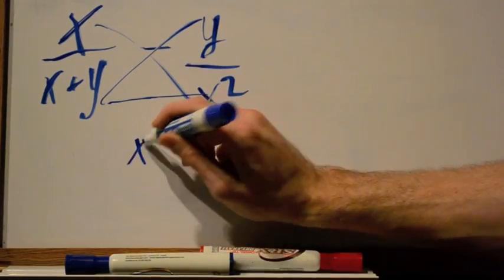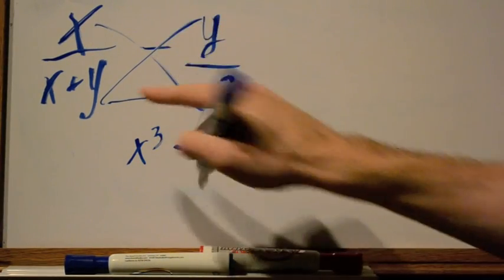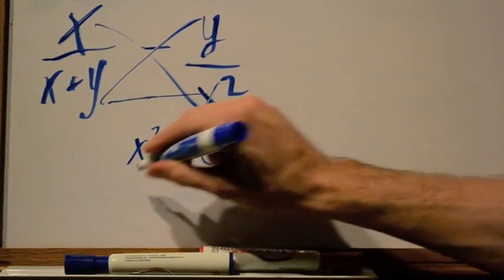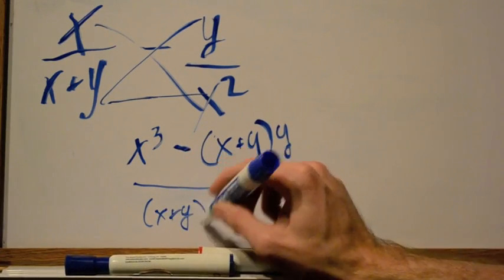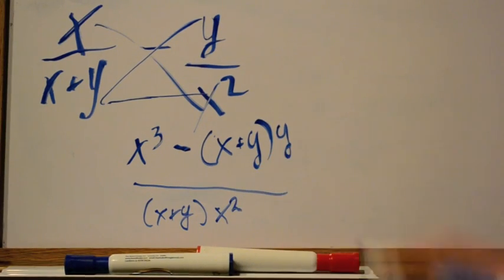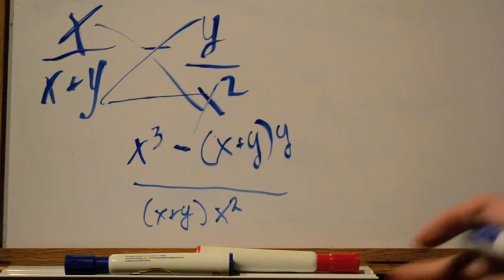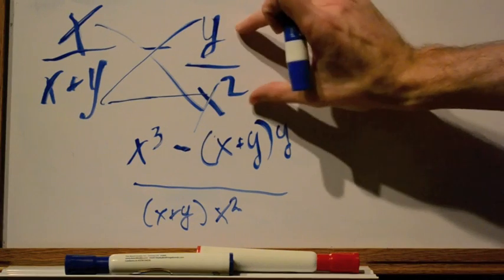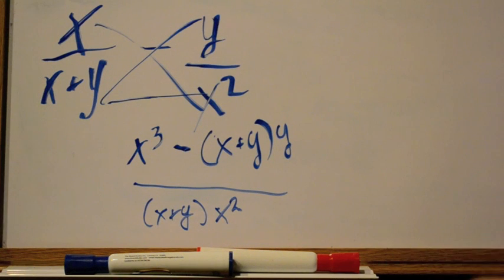Ready? x times x squared is x to the third, x cubed, minus, remember, minus, minus, x plus y times y all over this times this, x plus y times x squared. You can go ahead and simplify this, make it a little bit better. It's probably not going to clean up since I just made that problem out of my head. But the point is you can see this confusing problem that you really didn't know how to do turned into something very, very simple. It'll all work out very nicely and every single time it's going to be correct.